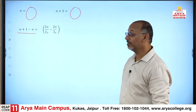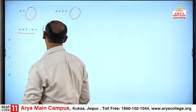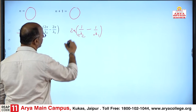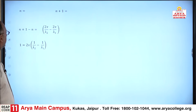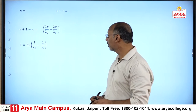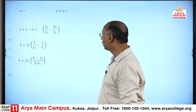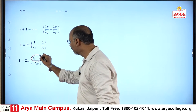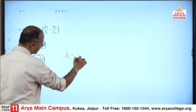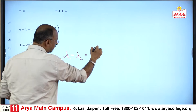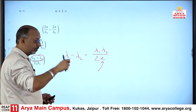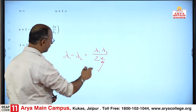Solving for λ₁ − λ₂: we get λ₁ − λ₂ = λ₁λ₂/2x, where 2x is the very small distance rotated on the micrometer screw.